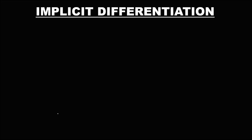So let's have this topic. For implicit differentiation, recall that the derivative of x is equal to 1. The derivative of 3x is equal to 3. Then for the derivative of 5x to the power 3, multiply this number to this exponent, so this is 15.